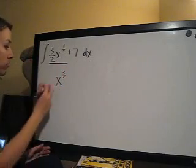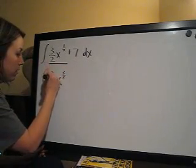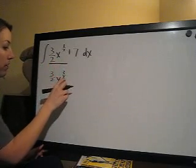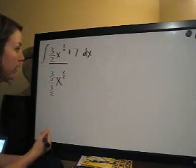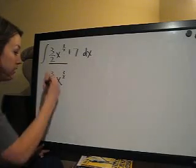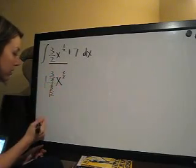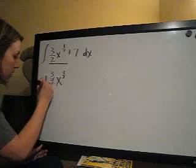And then we are going to divide the coefficient, 3 halves here, by the new exponent, which is 3 halves. 3 halves over 3 halves is 1. So we can cross that out and make that a 1.